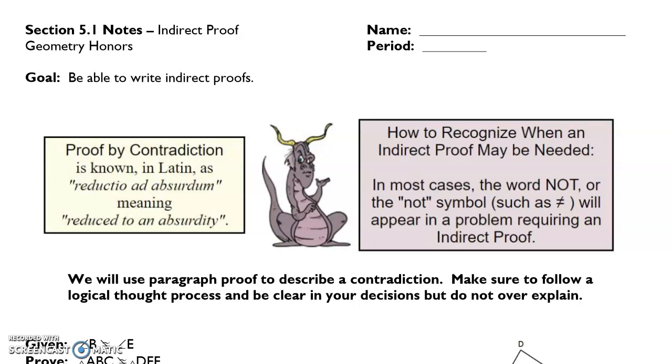So the idea of contradiction is going to be really important here. As you can see over here, our dragon friend is saying that essentially we're using indirect proof. When do I use it? When the word not, or the not symbol, or not equal to, not congruent is going to be in your proof specifically, that's what you're being asked to prove.